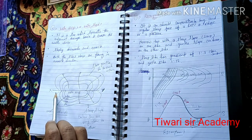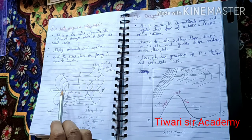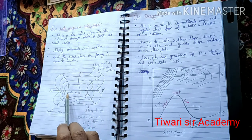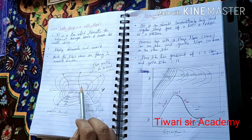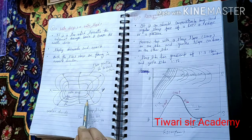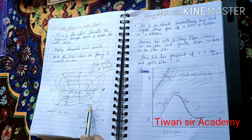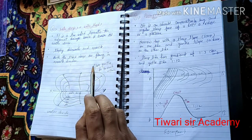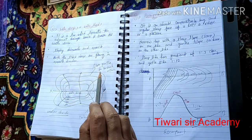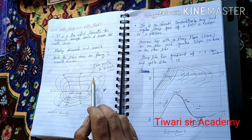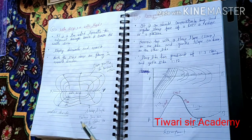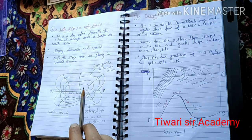This water divide line separates the drainage basins. On the steep side the contour lines are very close to each other, and on the other side the slope is gradual and the contour lines are far apart from each other. Where the slope is gradual, the contours will be more spread out.